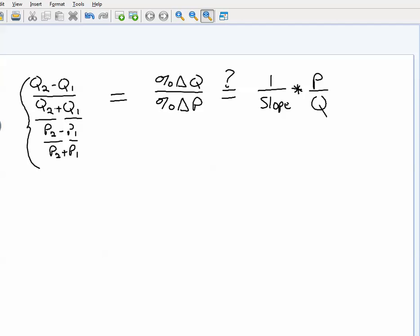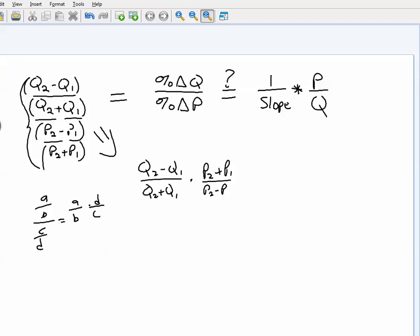All right, so the way I'm going to show that the point formula, which is the one on the right, is equal to the arc formula, is I'm going to take the arc formula and I'm going to manipulate it a little bit. The first thing I'm going to do is I'm going to take the denominator and invert it and put it up in the numerator. You remember there's a rule in math. If you have a over b divided by c over d, that's the same thing as a over b times d over c. Remember that rule? So I'm just going to apply that rule here. Think of that as a and this is b and this is c and this is d. So I have q2 minus q1 over q2 plus q1 times p2 plus p1 over p2 minus p1. Okay?